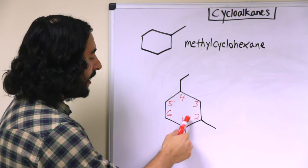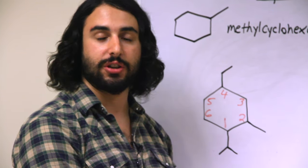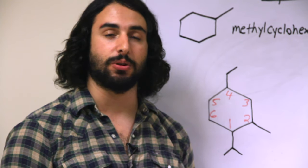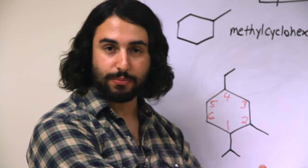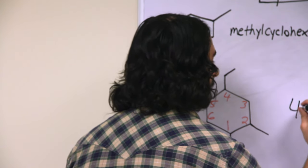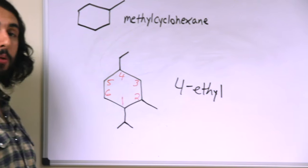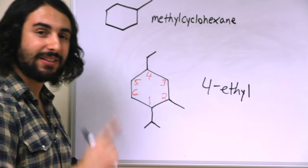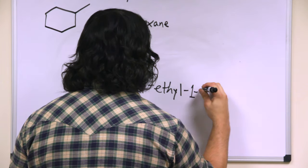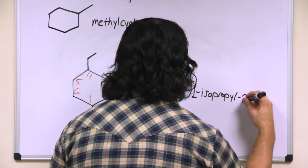Now the locants are one, two and four. It doesn't matter what the substituents are, at least if they are alkyl or halogen, those are equal priority. So here one, two and four is the lowest set of locants possible. Then by a separate algorithm we're going to just list them alphabetically as we always do. Four ethyl is going to be first, and then actually isopropyl is before methyl because iso is the only prefix that is taken into account for alphabeticity. So that's one isopropyl and then two methyl